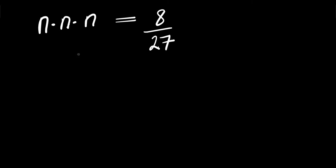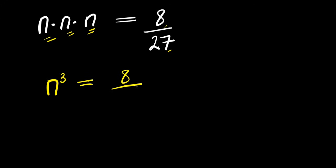Hello. How to solve this problem: we have n times n times n equals 8 divided by 27, solving for all values of n that satisfy this equation. So let's multiply the left-hand side: n times n squared times n. This is n³ equals 8 divided by 27.